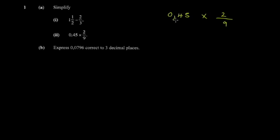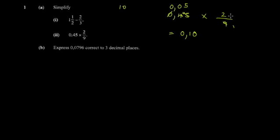I could change 0.45 into a fraction, but it's not necessary because I can see that 9 is a factor. So I divide: 9 into 9 gives 1, 9 into 0 gives 0, 9 into 45 gives 5 — so 0.45 divided by 9 is 0.05. Then 0.05 times 2: ignore decimals, multiply 5 by 2 to get 10, then place two decimal places, giving 0.10.